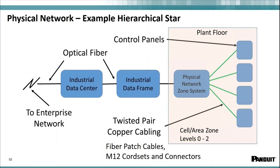Here's a closer look at the star topology of the plant floor. The area we're focusing on is levels zero through two, where you'll find your twisted pair copper cabling on the plant floor. Occasionally you'll find fiber patch cables depending on EMC or EMI requirements, as well as your M12 cord sets and connectors, M8 and 7.8 style connectors and cord sets — the stuff that's on the machine, on sensor, on I/O block.